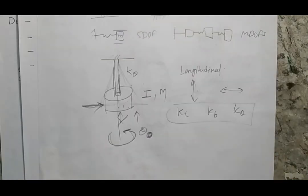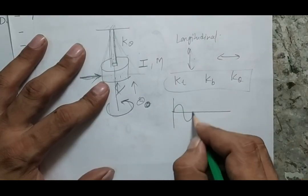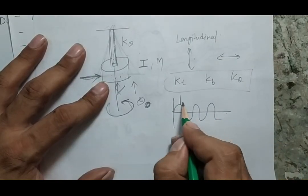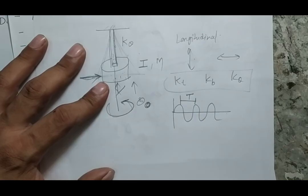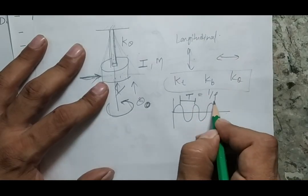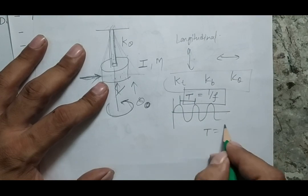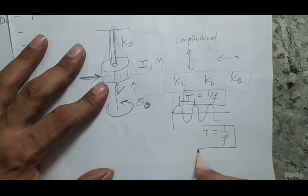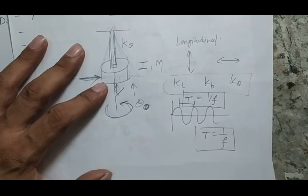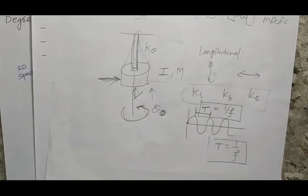In simple harmonic motion, if I can measure the time period of the motion I can calculate the frequency, since time period T and frequency F are inversely related: T = 1/F. In the next lecture we are going to talk about free vibration of a single degree of freedom system. Thank you.